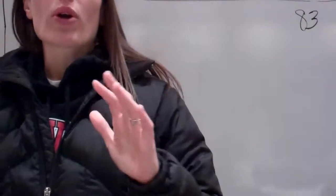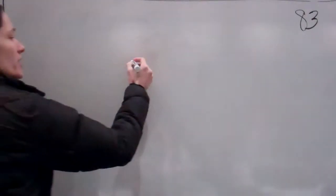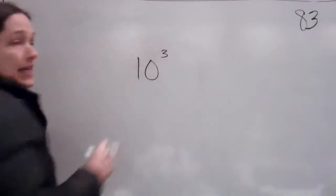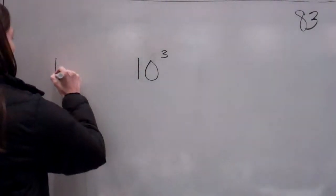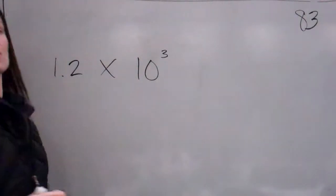Quick review. When we're working with exponents, what does this actually mean? 10 times 10 times 10. Now, if I were to say, for example, 1.2 times 10 to the third power, what would I do?